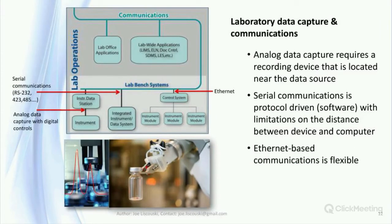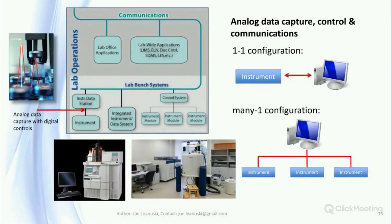How data and information are collected and moved around the laboratory will have bearing on how you prepare for centralized database systems and where they are located. The three primary modes of collection and communications are: analog data capture with digital controls, serial communications, and ethernet-compliant systems. These can range from one-to-one instrument-computer combinations to devices with built-in communications protocols. The output of an analog device can go to a meter, chart recorder, or most commonly today a computer system.